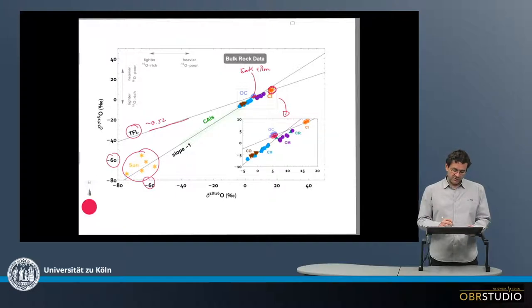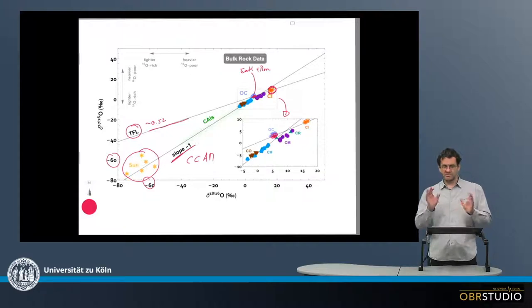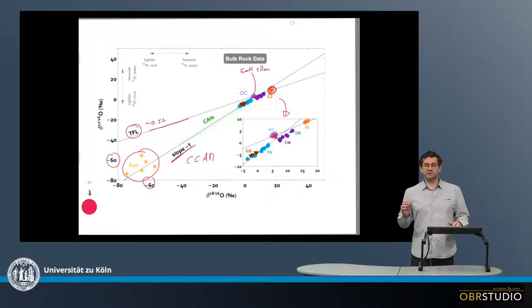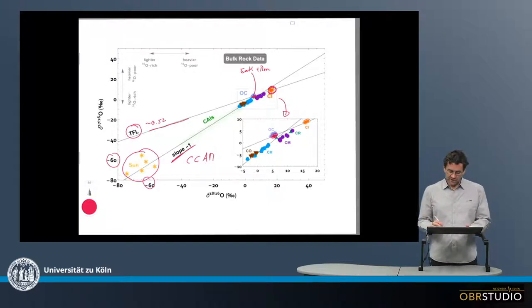And the Sun then plots together with other meteorites on a slope one line, roughly slope one line. It's also sometimes called a CCAM line, carbonaceous chondrite anhydrous mixing line, or Euron-Russell line. There are a couple of different names and different slopes, but it's all roughly one.